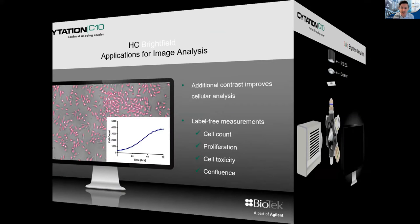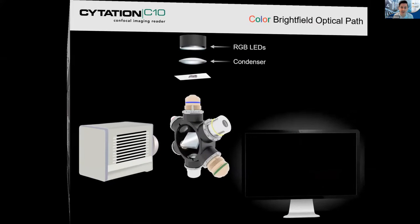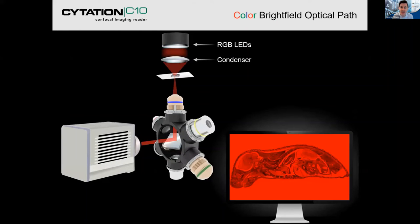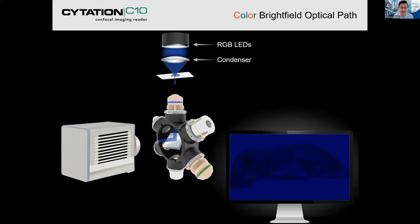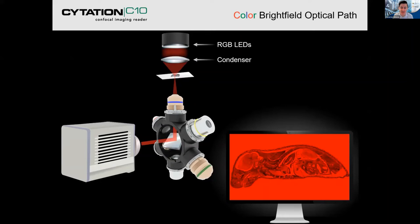The color bright field optical pathway involves some RGB LEDs moving through a condenser and hitting the camera, and then receiving the signal.